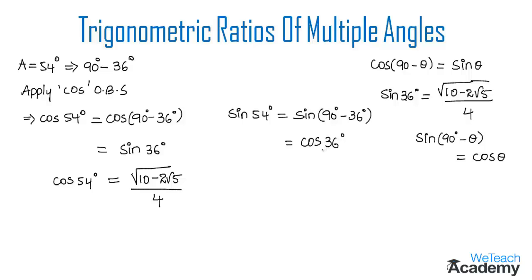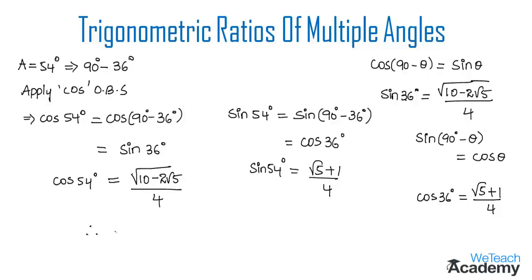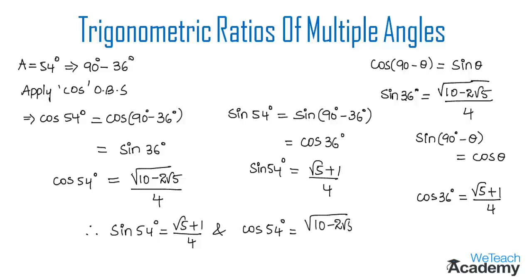So we get cos 36 degrees. We already know the value of cos 36 from our previous videos, which is equal to (root 5 plus 1) divided by 4. Therefore, sine 54 degrees is equal to (root 5 plus 1) divided by 4, whereas the value for cos 54 degrees is under root of (10 minus 2 root 5) divided by 4.